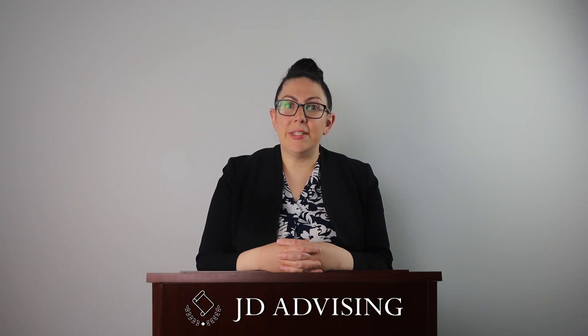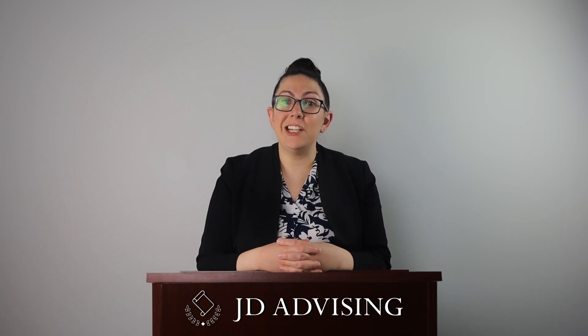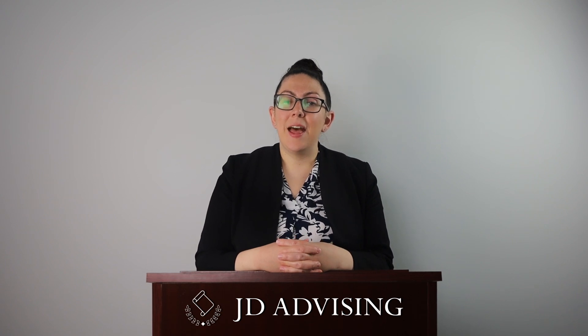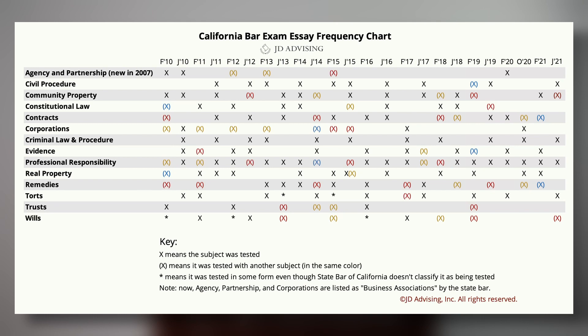In this video, I want to discuss JD Advising's Essay Frequency Chart, which illustrates the frequency with which each subject has been tested on the essay portion of the California Bar Exam. The black Xs on the chart indicate instances in which that subject was tested by itself, and the colored Xs indicate when a subject was tested as a crossover with another subject. You can find a copy of the chart in the California Bar Exam essay guide and also on our website.